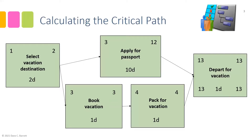We now jump to the predecessors of 'Depart for Vacation.' On the backward pass, we take the Late Start and subtract one to set the Late Finish of each predecessor — creating a Late Finish of day 12 for both 'Apply for Passport' and 'Pack for Vacation.' For 'Apply for Passport': 12 minus 10 plus 1 equals a Late Start of 3. For 'Pack for Vacation': 12 minus 1 plus 1 equals a Late Start of 12.